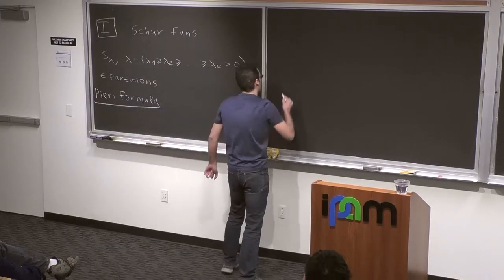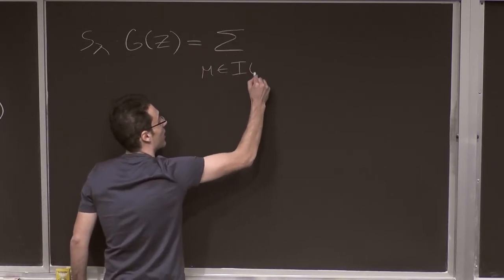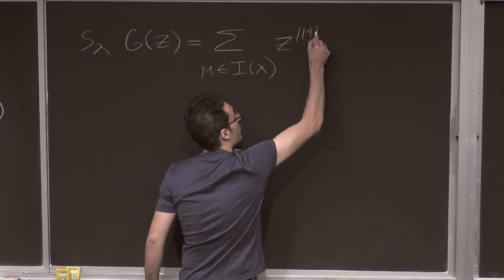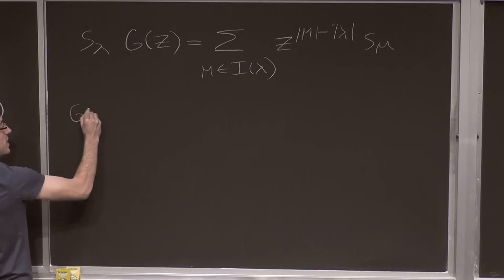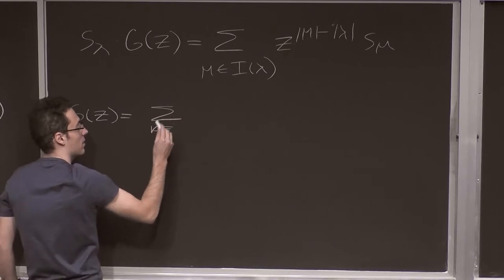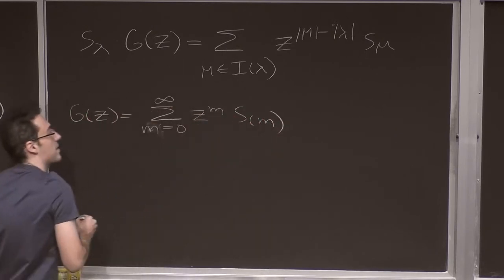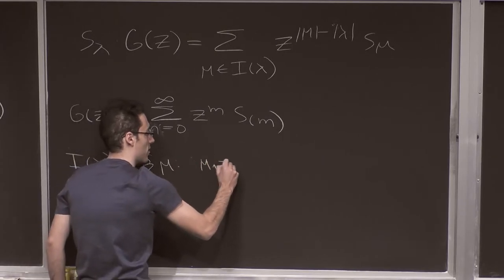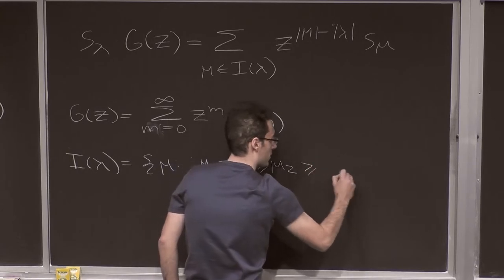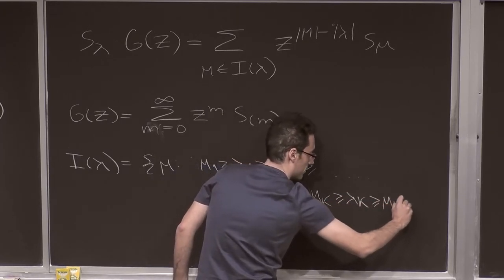I'm going to write it in a slightly different way than you usually see. S_lambda multiplied by g(z) is a sum over all mu in I(lambda) of z to the power |mu| minus |lambda| times S_mu. Here g(z) is a generating function: sum from m=0 to infinity of z^m S_m. And I(lambda) is the set of partitions which interlace with lambda, meaning mu_1 >= lambda_1 >= mu_2 >= ... >= mu_k >= lambda_k >= mu_{k+1} >= 0.